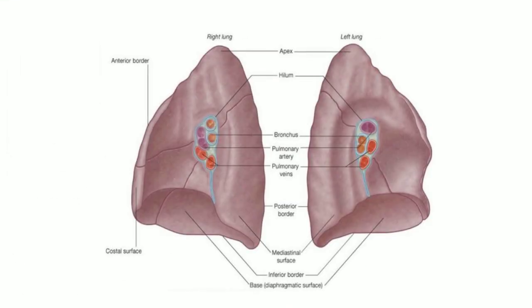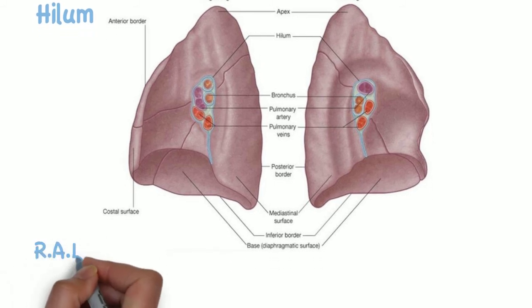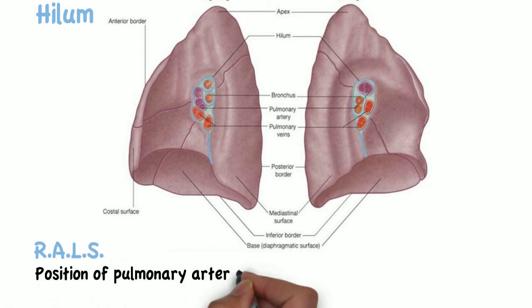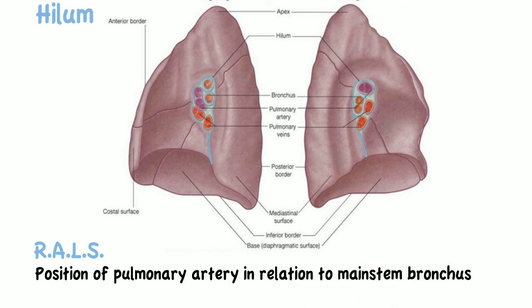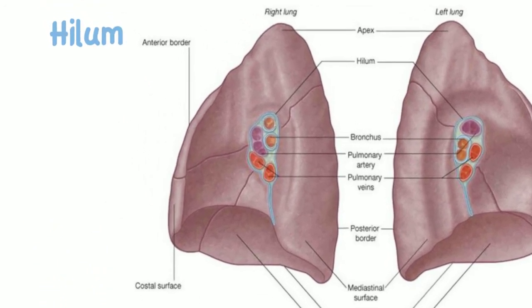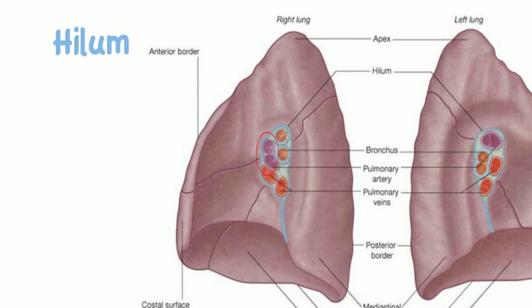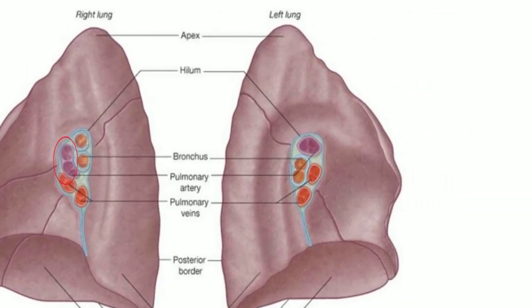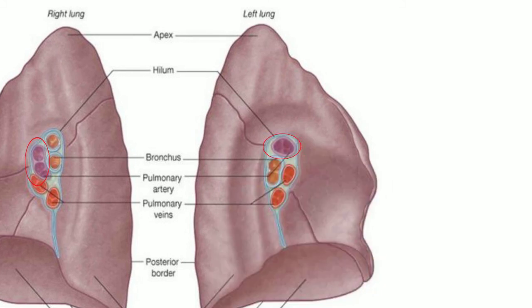Each lung contains a large triangular depression on the mediastinal surface called the hilum, which is where the bronchus, the pulmonary artery, and the pulmonary veins enter the lungs. The RALS acronym helps remember the position of the pulmonary artery relative to the main stem bronchus: right anterior, left superior. On the right lung, the pulmonary artery is located anteriorly to the main stem bronchus, while on the left lung it is located superiorly.